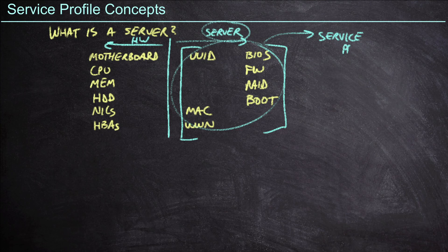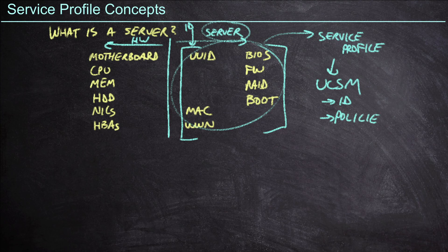A service profile is a software entity that we define inside of UCS Manager. The service profile is going to include the identity points — basically the MAC addresses, the worldwide names, and the UUIDs — and then we also have the policies: the BIOS settings, the firmware, the RAID, and the boot policies, among many others. This is not an exhaustive list.